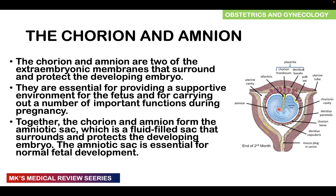If we turn our attention to this image, the inner membrane is known as the amnion, which produces the fluid on the inside known as amniotic fluid — the child is swimming in this amniotic fluid. The outer membrane surrounding this is known as the chorion. These two together form what is known as the amniotic sac.